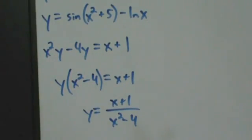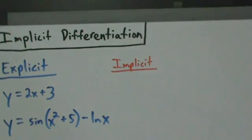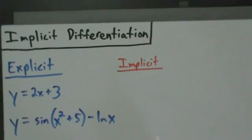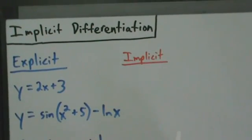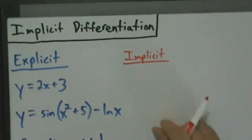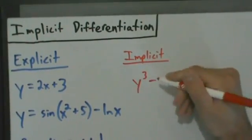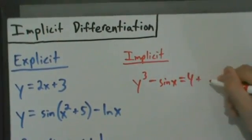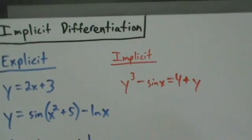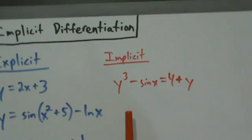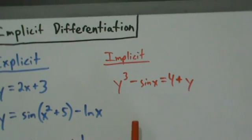An implicit function is one where you can't really do that. For implicit functions you might be able to solve for y, but you might not get something unique — in which case you could still kind of treat it explicitly, but you'd have to be really careful. Or another type of implicit function is one where you just can't solve for y at all. For example: y cubed minus sine of x equals 4 plus y. Technically you could get y as a function of x, but you would have three different solutions because of y cubed, and it would be a huge mess. So it's better just to treat it implicitly.